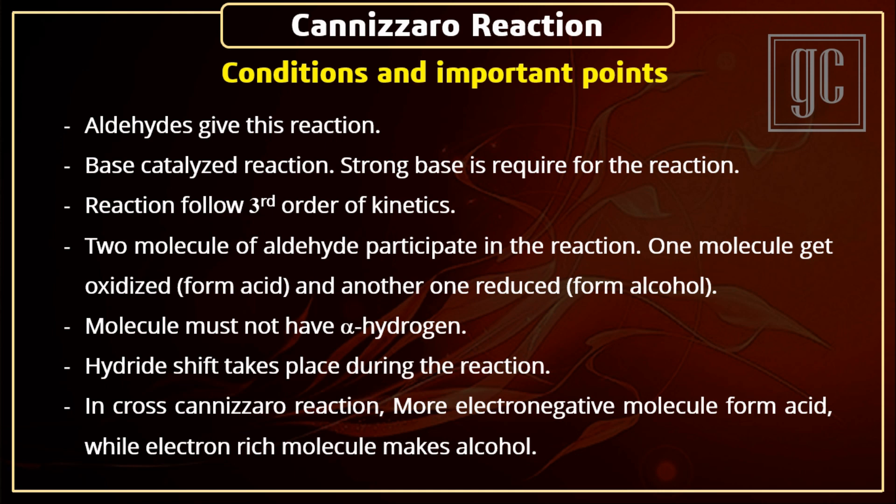Next are the conditions and important points for the reaction. Aliphatic and aromatic aldehydes give this reaction. This is a base-catalyzed reaction and a strong base is required. The reaction follows third order kinetics. Two molecules of aldehyde participate in the reaction — one molecule gets oxidized and forms the acid, and the other is reduced and forms the alcohol. The molecule must not have alpha hydrogen, and a hydride shift takes place during the reaction.